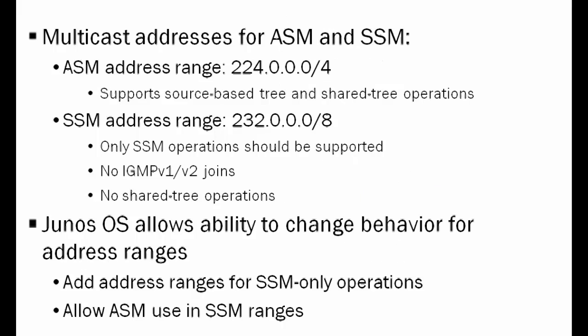There are two other things to discuss. We have the address ranges available with any-source multicast and those available with source-specific multicast. By default, there are strict restrictions with the SSM range — no IGMP version 1 or 2 joins and no shared tree operations. But we can change this. We can configure SSM operations to use some of the any-source multicast address space, and we can also do the opposite — make source-specific multicast address ranges available for any-source multicast applications.